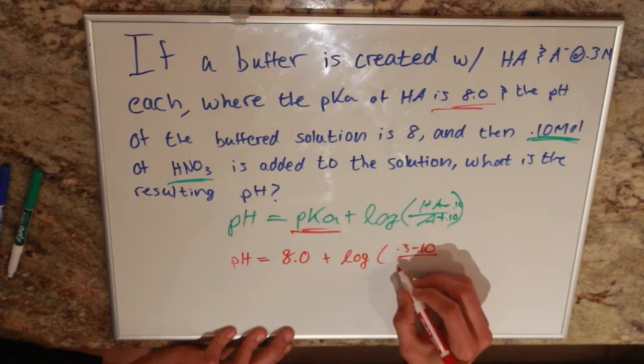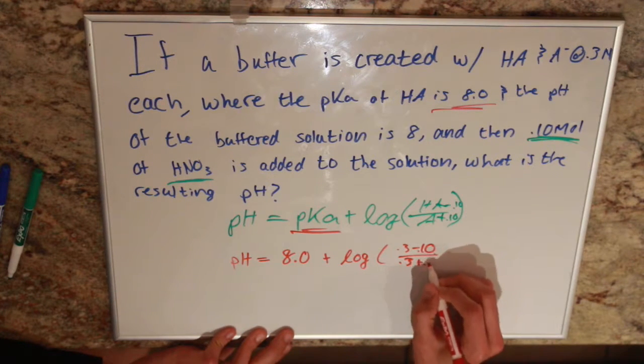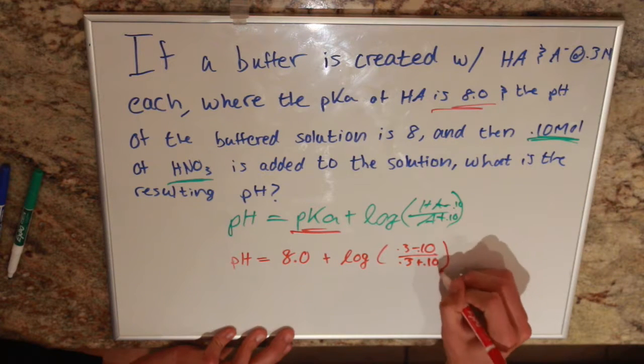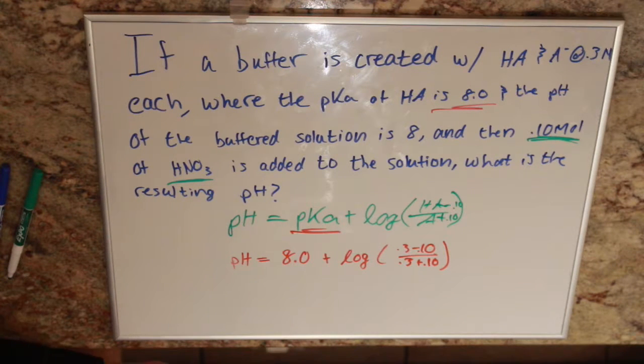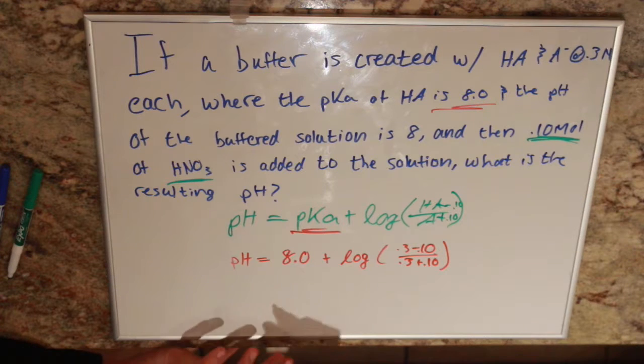And then we have our acid, which is also 0.3. We're going to be adding 0.10 to that because we're adding acid to the solution. So, we're going to be increasing that concentration.